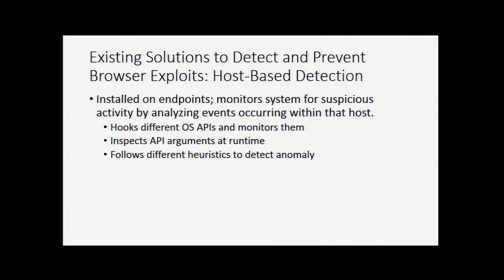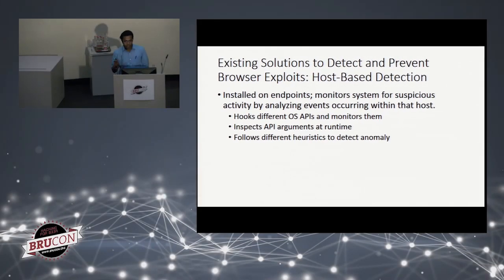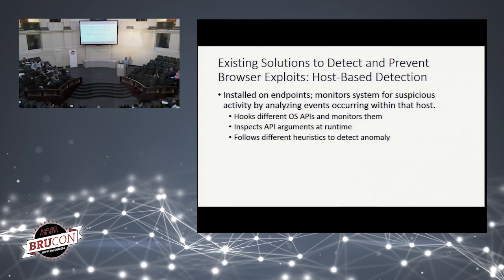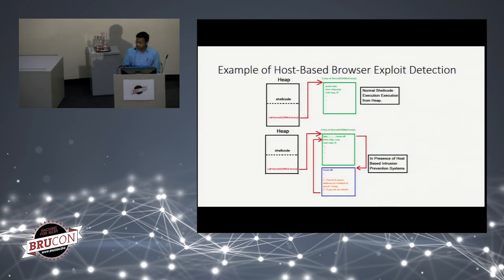HIPS requires an agent installed on the client system. The agent hooks the processes it wants to monitor and hooks different APIs, continuously monitoring suspicious arguments. This is done via inline hooking — it replaces the first few bytes of a function with its own code, so whenever those functions are called, execution first goes to the HIPS code. This is a high-level overview of how a typical host-based browser exploit detection system works.